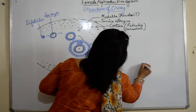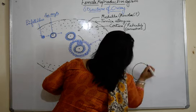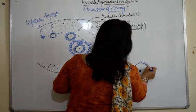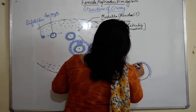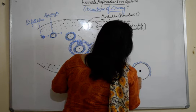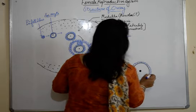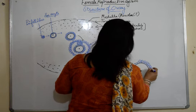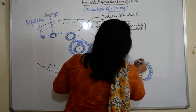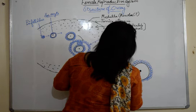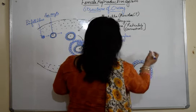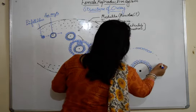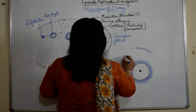Now we will make the Graafian follicle separately and label it. We have the secondary oocyte, which is surrounded by a layer of follicle cells known as the discus proligerus. It is surrounded by a fluid-filled cavity; we will make the follicle layers around it.